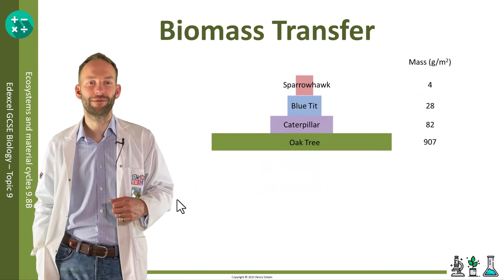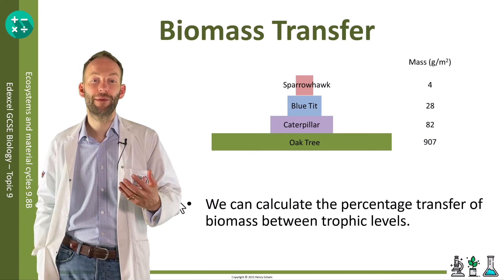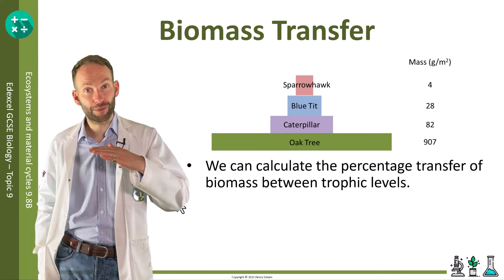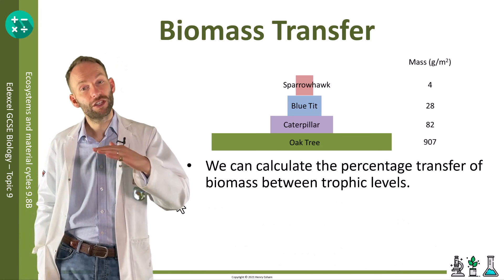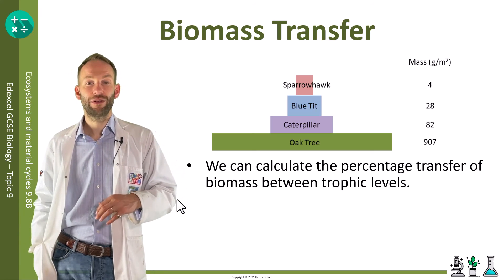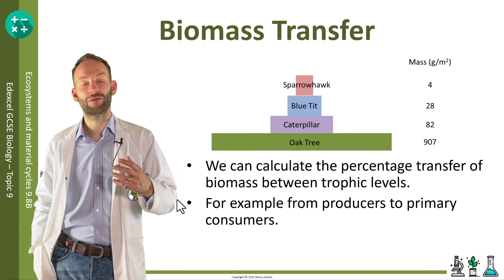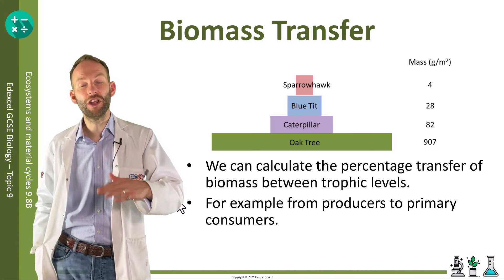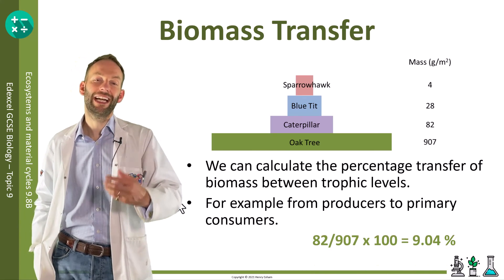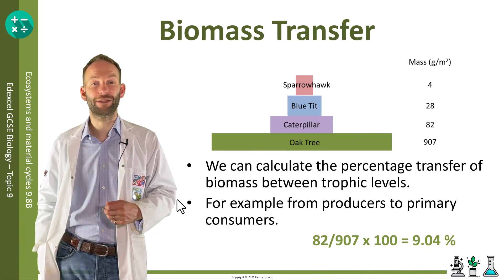We can calculate the percentage transfer of biomass between trophic levels — for example, from the producers to the primary consumers. In this case, we do 82 divided by 907 times 100, giving approximately 9% of the energy from the oak tree that has gone into the caterpillars as biomass.